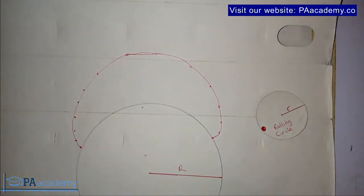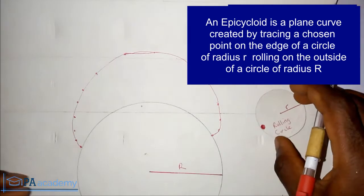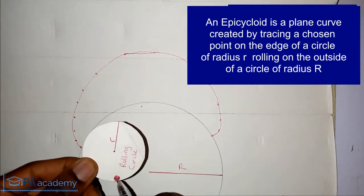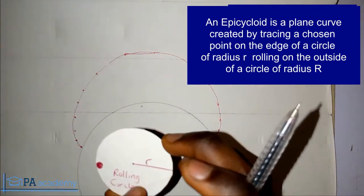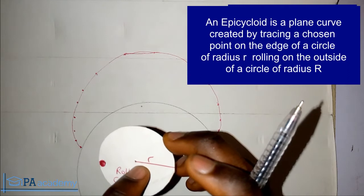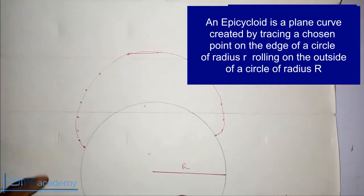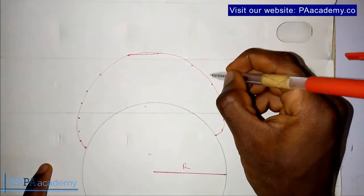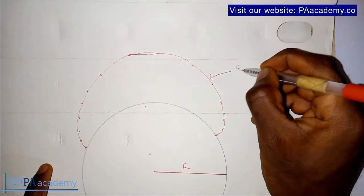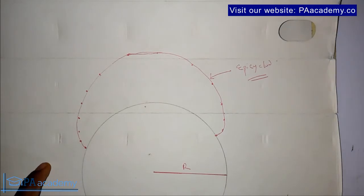Looking at the definition again: an epicycloid is a plane curve created by tracing a chosen point on the edge of a circle of radius small r, rolling on the outside of a circle of radius capital R. This chosen point traces the curve on the outside of the circle with radius capital R. So what you see here is what we call the epicycloid.